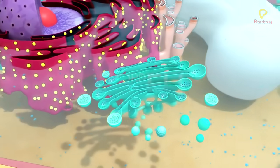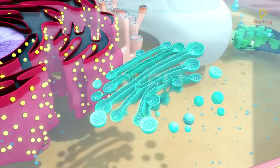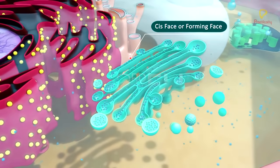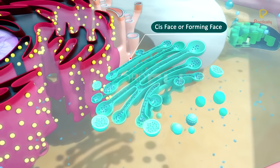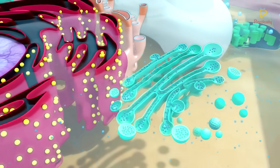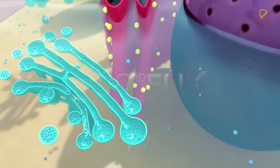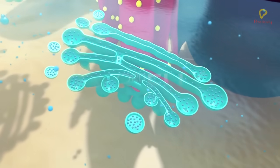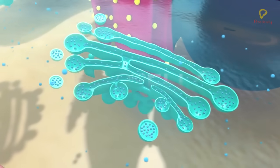A Golgi apparatus has distinct faces: the convex cis face, or the forming face, and the concave trans, or the maturing face. The cis and trans faces of the organelle are entirely different, but they are interconnected.